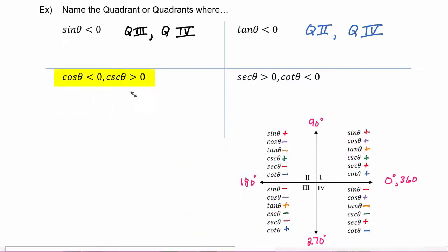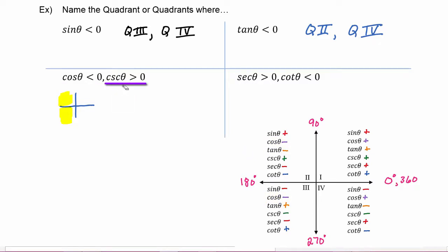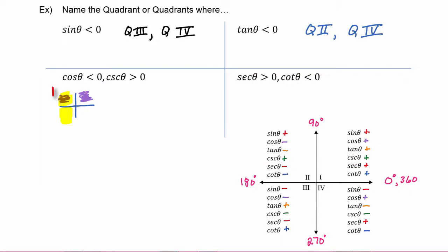In this third case, we have two conditions to satisfy. First, cosine theta must be negative, which occurs in quadrant two and quadrant three. Furthermore, cosecant theta must be positive, and cosecant theta is positive in quadrant one and quadrant two. The place where both conditions are true occurs only in quadrant two.